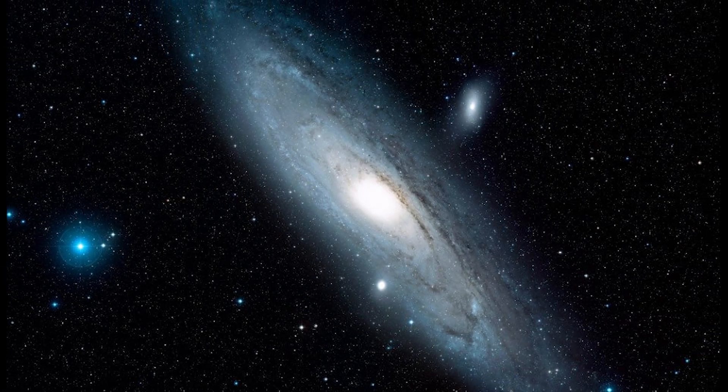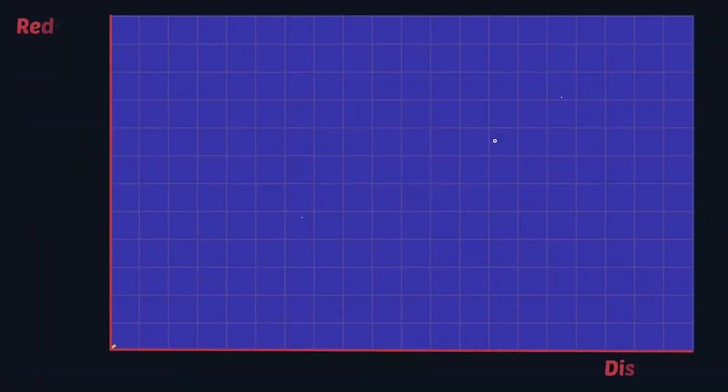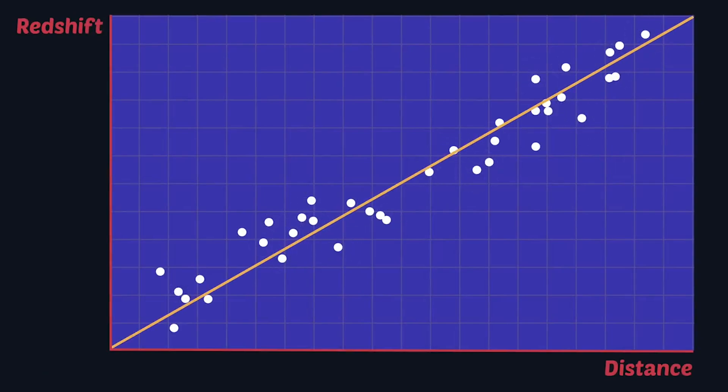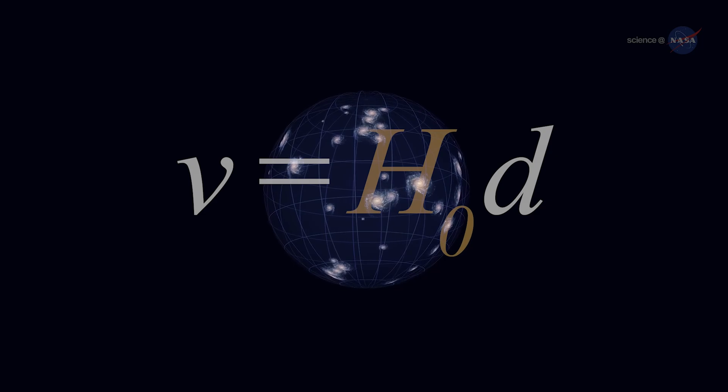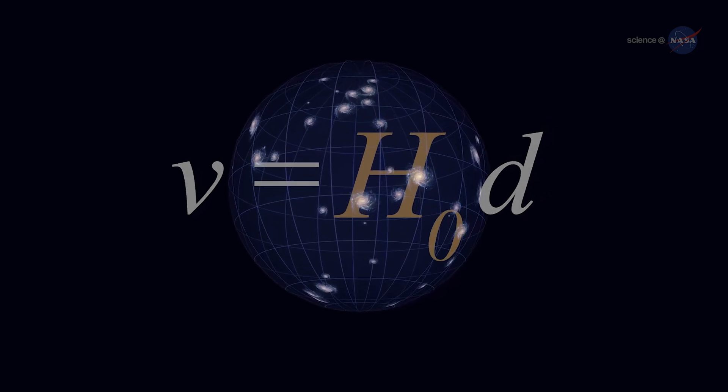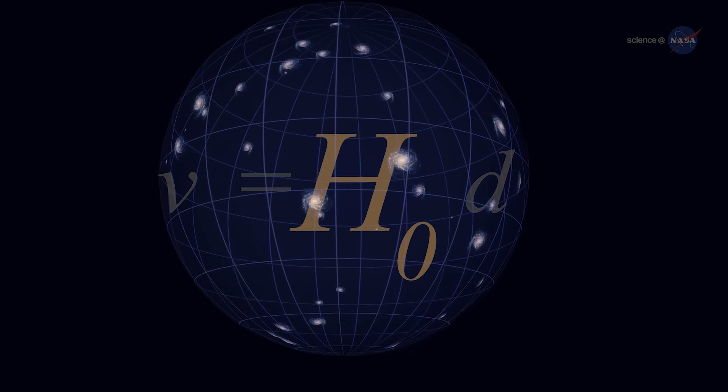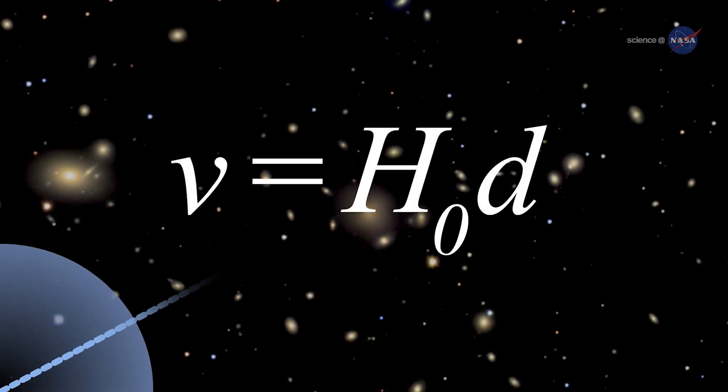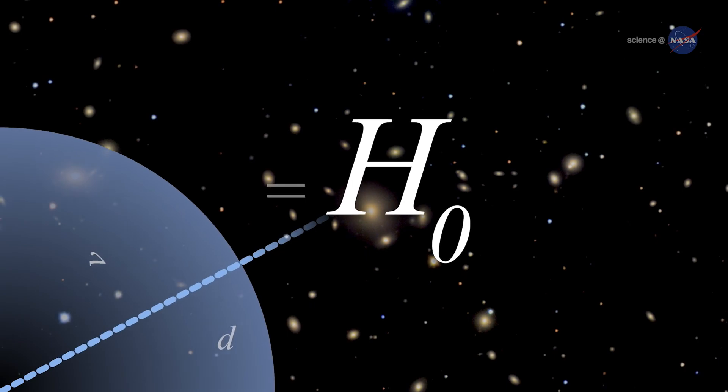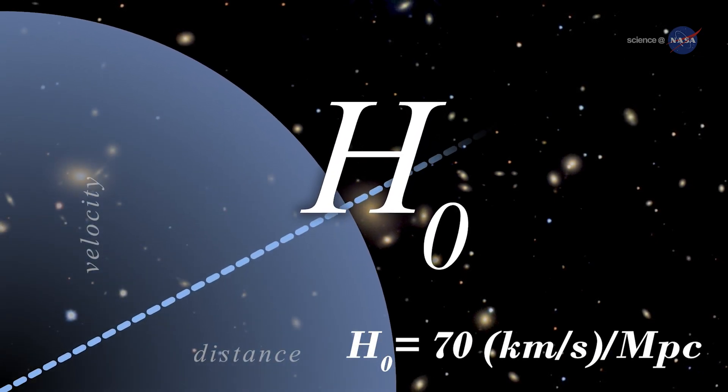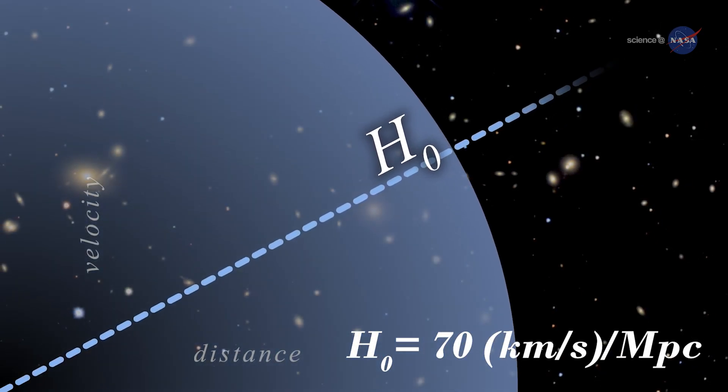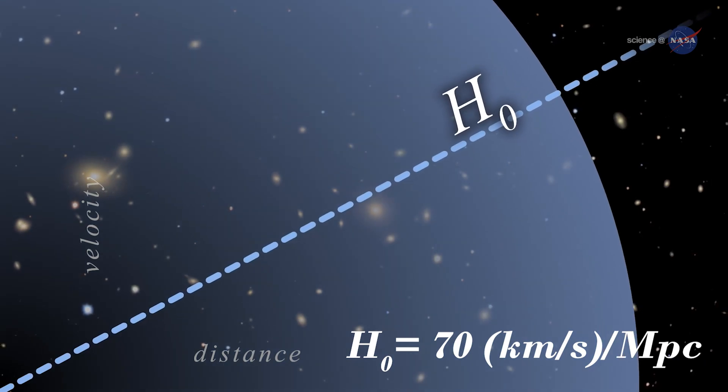But when Sir Edwin Hubble plotted the redshifted galaxies on a graph, he came to a conclusion. He said the universe is expanding. He named the rate of expansion the Hubble constant. Surprisingly, the value that he proposed for Hubble constant is very close to today's observation.